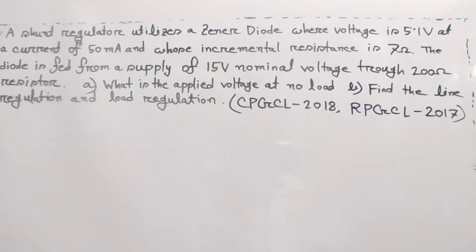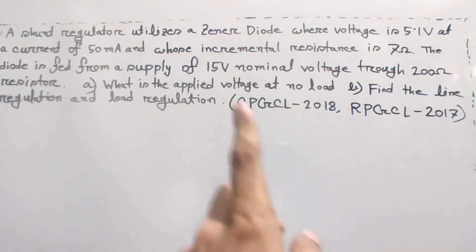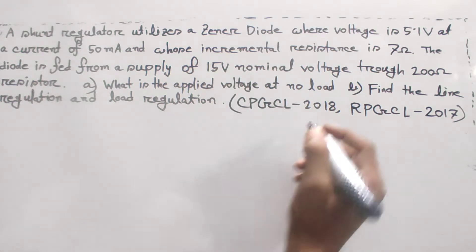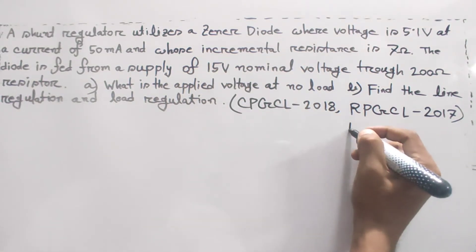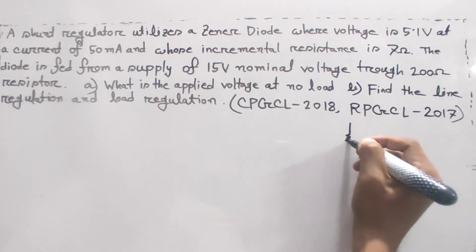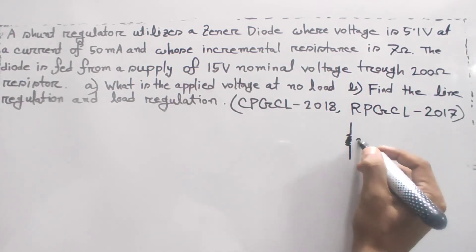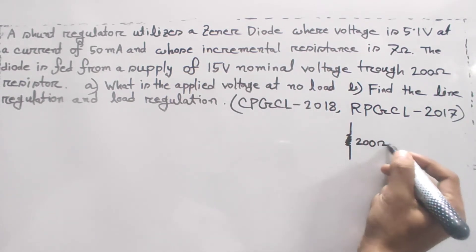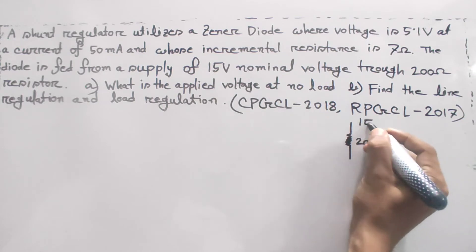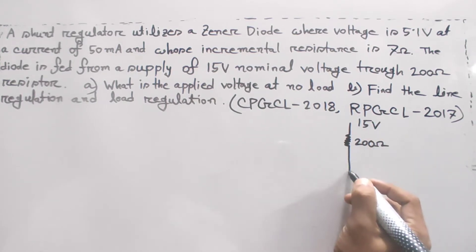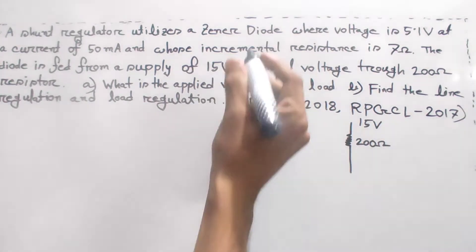The circuit has a nominal voltage of 15V. I have 15V at the top level, connected through a 200 ohm resistor.